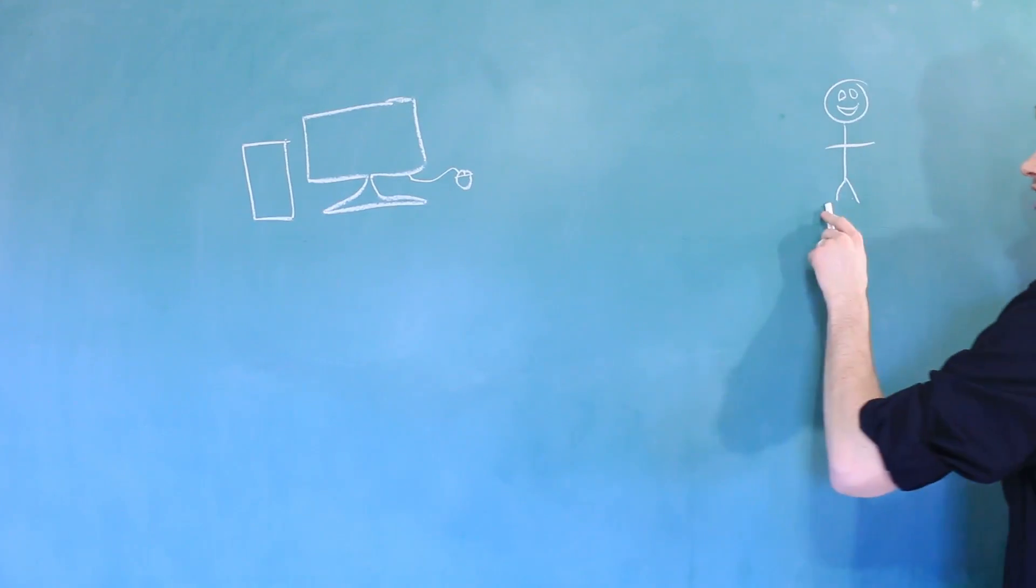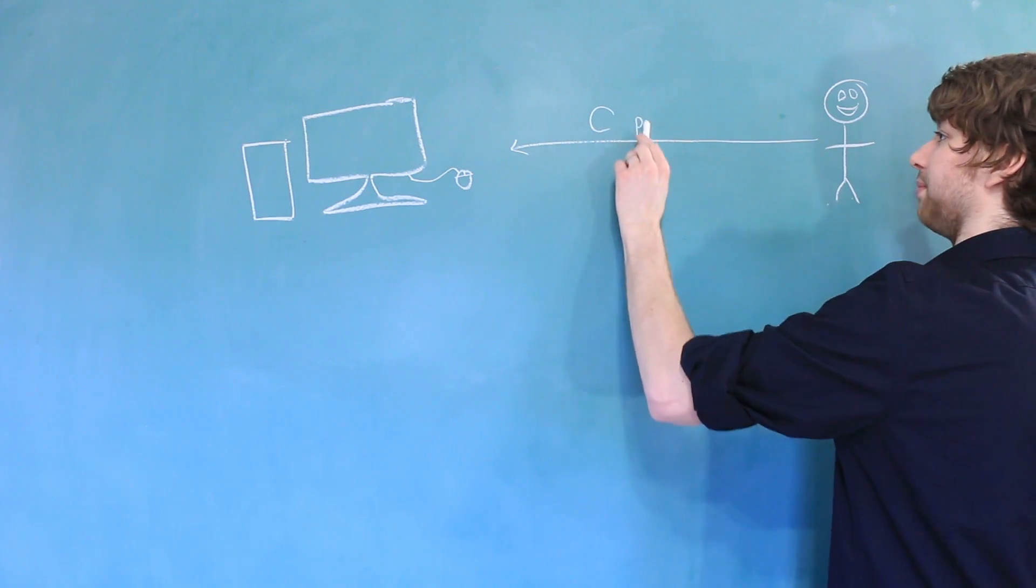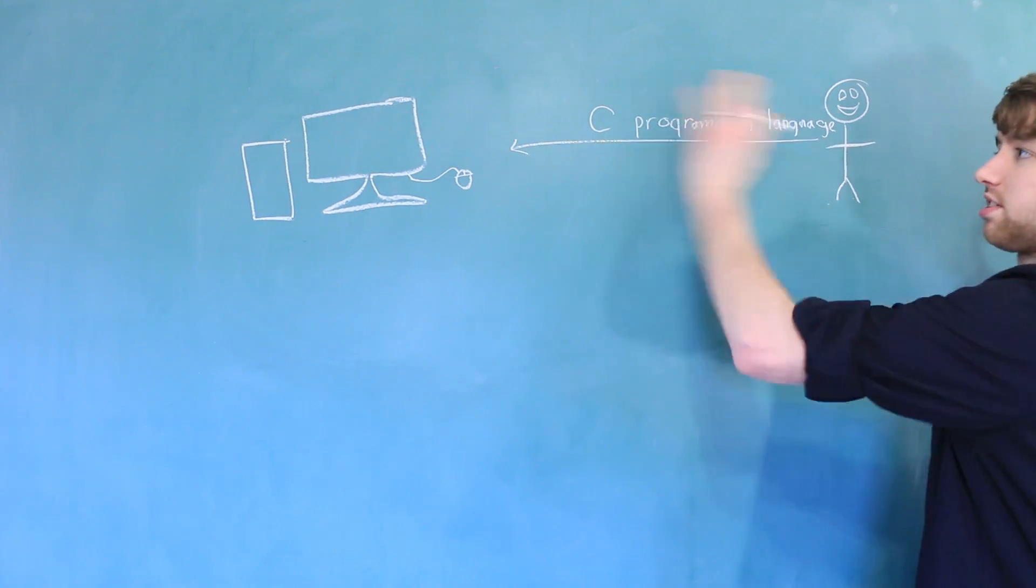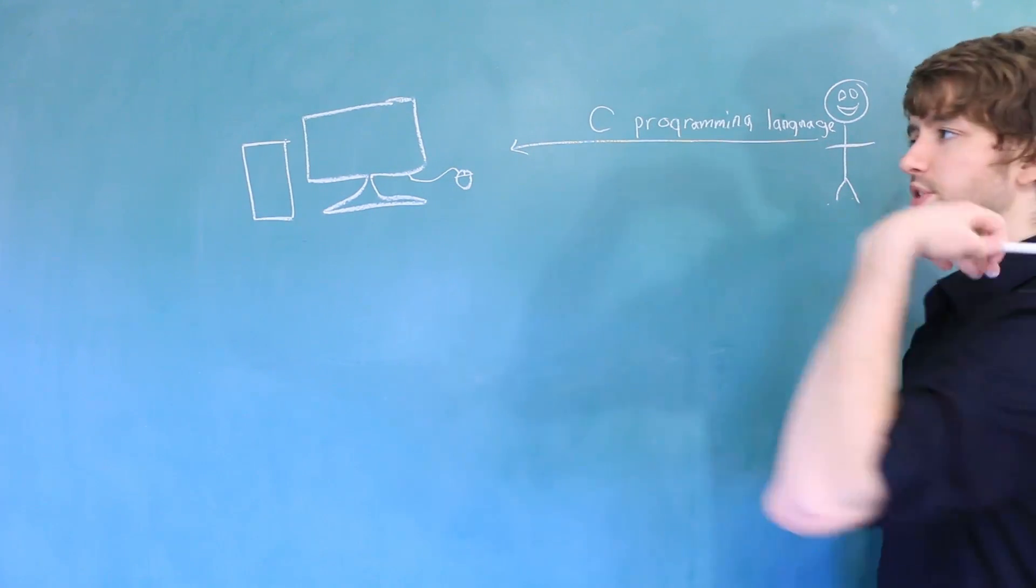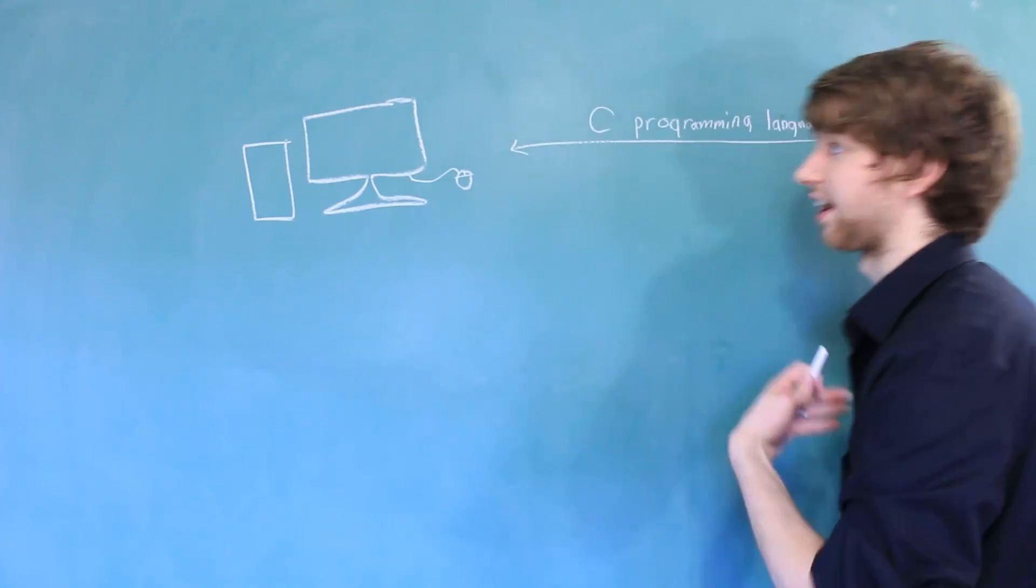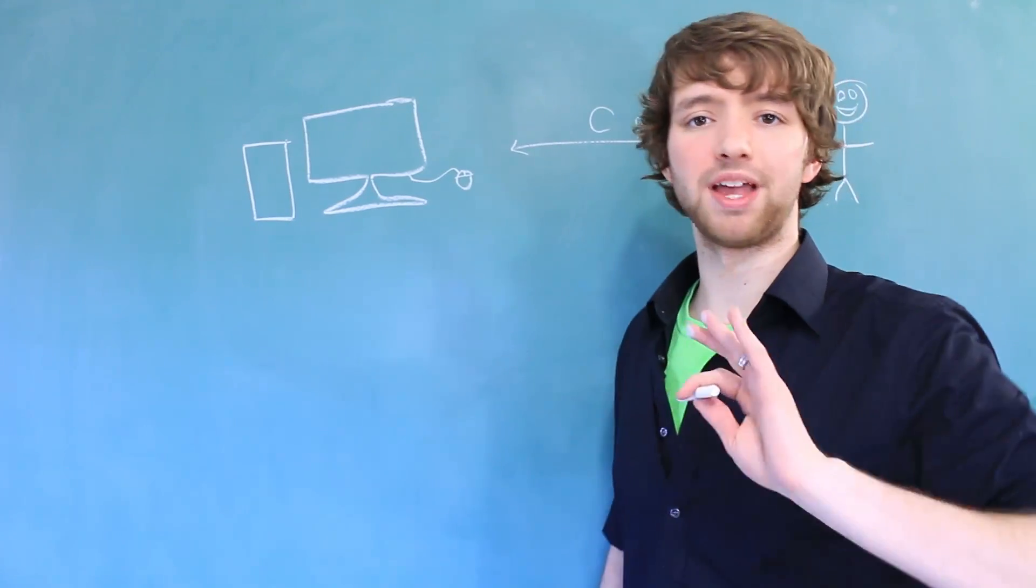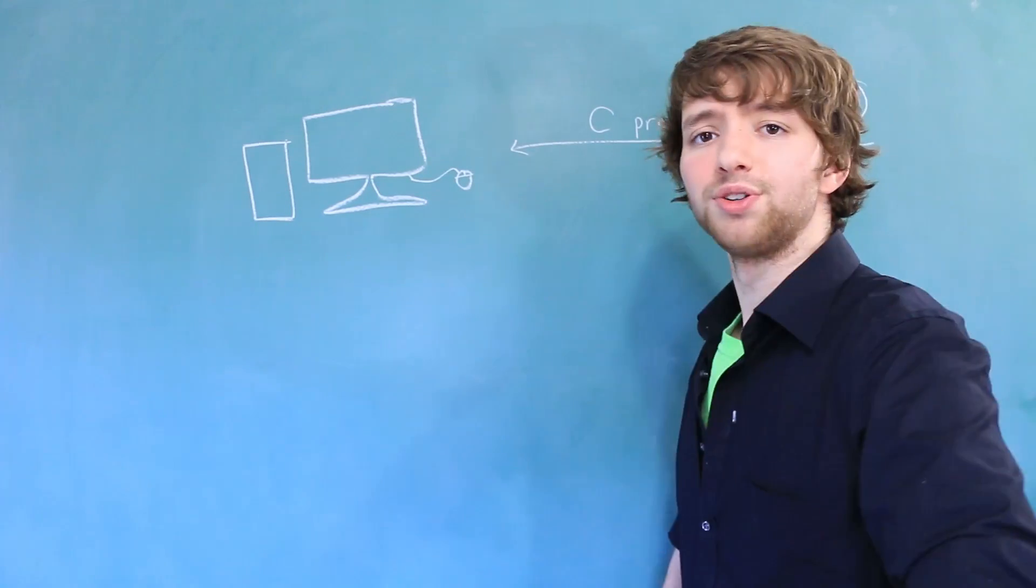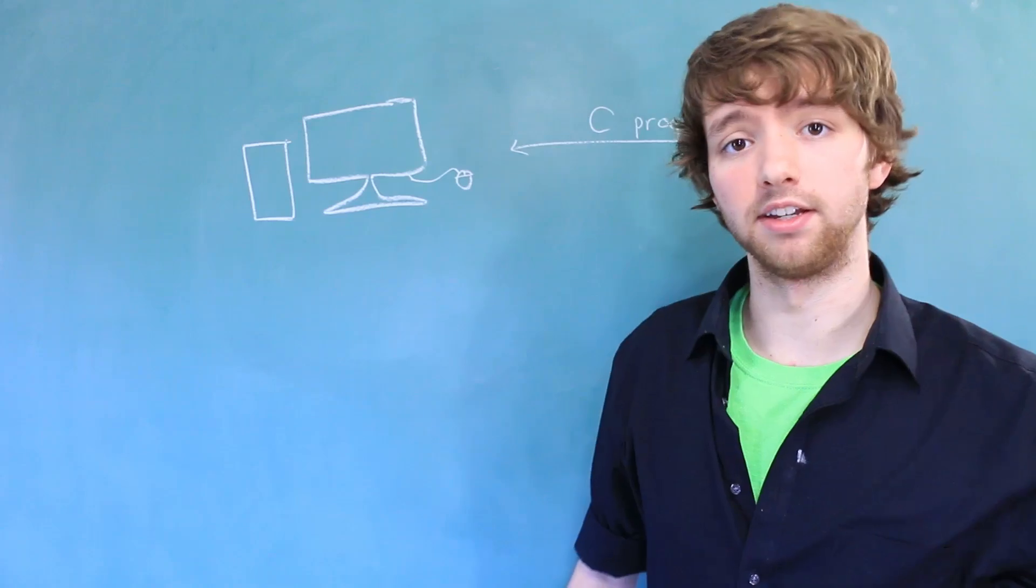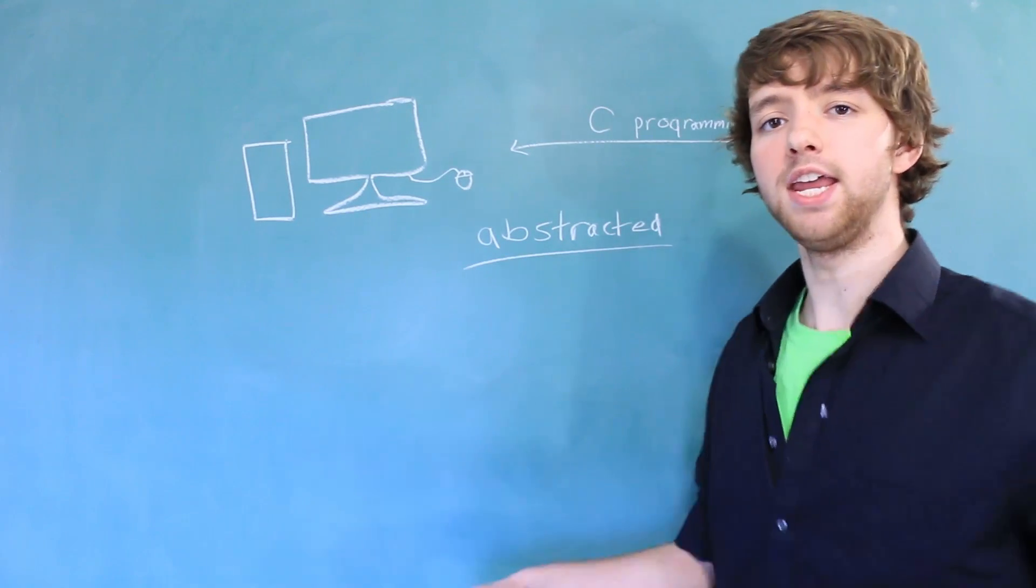Here's the computer, here's us, and we can tell the computer what to do using the C programming language. What the computer does with the C programming language when we're starting out, we don't really care about all that. All we care about is the fact that we can tell the computer what to do. That means we don't even have to worry about all that machine code and all that stuff. You could say that stuff is abstracted away. When something is abstracted away, it means it's hidden from us.